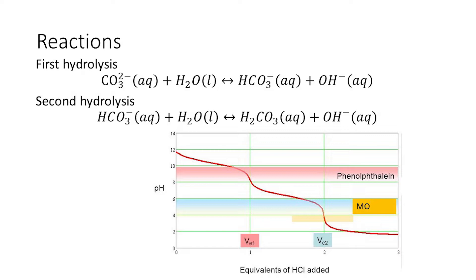When you carry out a titration between sodium carbonate and HCl, it takes place in two steps. First, carbonate forms the bicarbonate ion — this reaction takes place at a pH around 8 to 10. The second step is the reaction of bicarbonate with HCl, which takes place at a pH around 3 to 5.